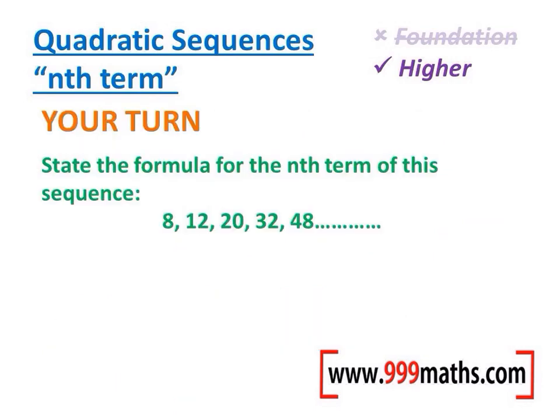So here's one for you to do. As always, pause now before we go through the answer. Step 1, find the differences. As the differences are not the same value, we need to do the double differences. These values are the same. So now we know it is a quadratic sequence. We need to half this value, and it will be that many n squareds. Half of 4 is 2, so it's 2n squared.